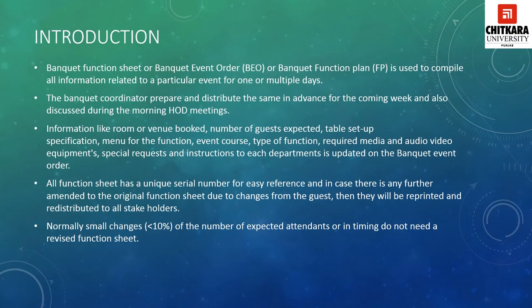The first thing we are going to cover is the introduction. Banquet Function Sheet, or Banquet Event Order — we call it BEO — or Banquet Function Plan, or FP, is used to compile all information related to a particular event for one or multiple days. The banquet coordinator prepares and distributes the same in advance for the coming week, and it is also discussed during the morning HOD (Head of Department) meetings. Information like room or venue booked, number of guests expected, table setup, specifications, menu for the function, event course, type of function, and required media and audio-video equipment — along with special requests and instructions to each department — is updated on the Banquet Event Order so that every department helps the banquet department complete the task.